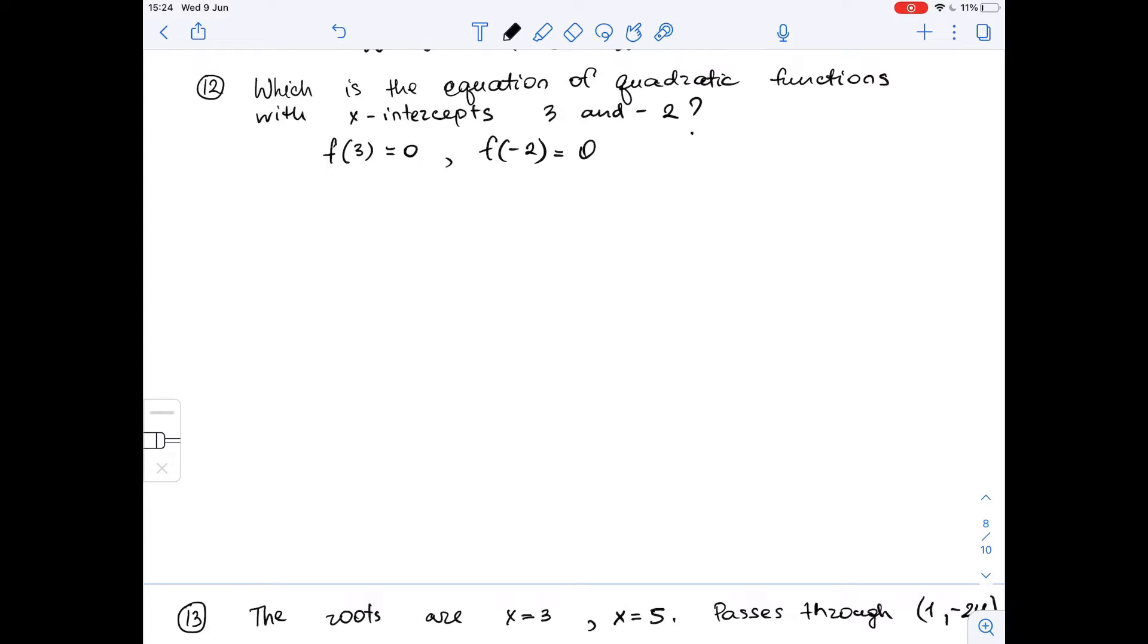That means that f of x is equal to (x minus 3), the first x-intercept, times (x minus negative 2), which is (x plus 2).